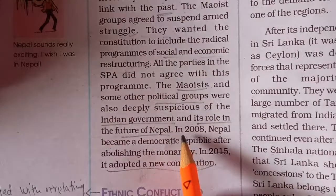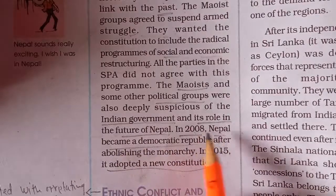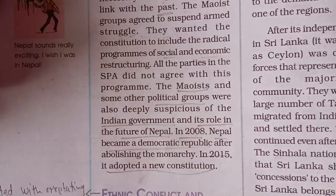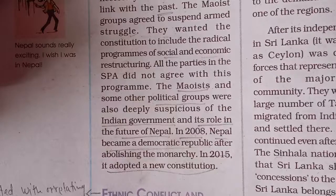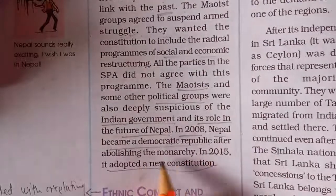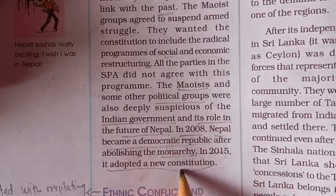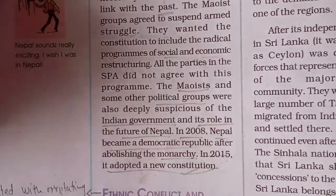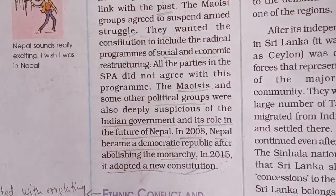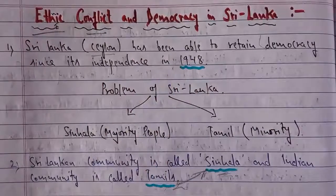In 2008, Nepal became a democratic republic — a form of government where the government and the head of the government are elected by the people. The monarchy was completely abolished. Finally, in 2015, Nepal adopted a new constitution. These two important dates — 2008 and 2015 — are important to remember. The next topic is ethnic conflict and democracy in Sri Lanka.